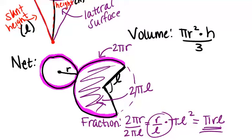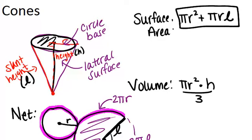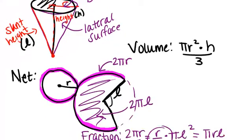So going back up to the overall surface area, we had pi r squared for the circle plus pi r l for the area of the lateral surface. So you just need to remember this formula for surface area, and hopefully you have some sense for where it came from which we talked about here.